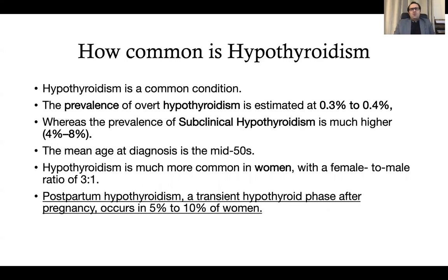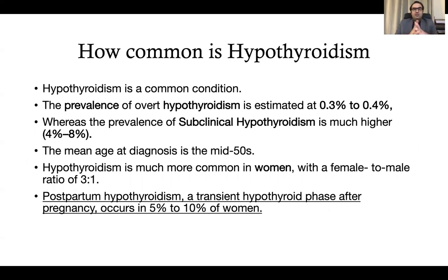Because TSH is a very sensitive marker, it will start rising before the T4 goes down. It is a very common condition. The prevalence of overt hypothyroidism is around 0.4% and subclinical is 10 to 15 times more, meaning 4 to 8% of the population will have subclinical hypothyroidism. We have to screen many patients who have vague symptoms: fatigue, lethargy, weakness, generalized body aches and pains, weight gain, and skin and hair issues.